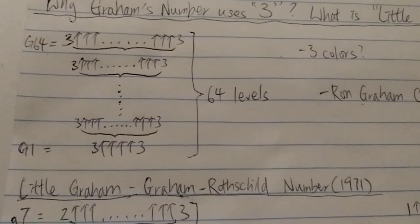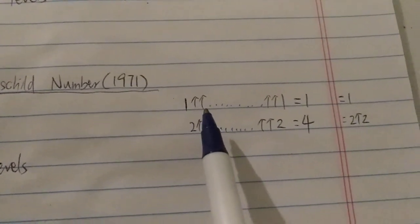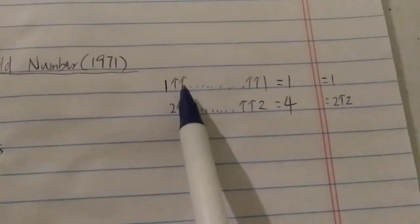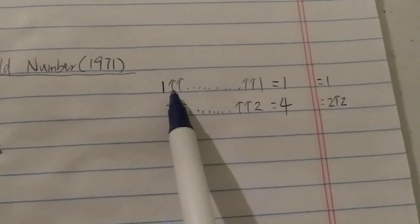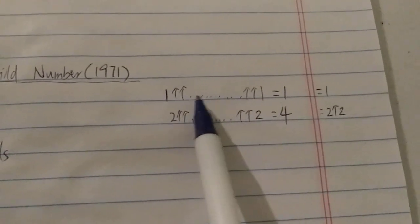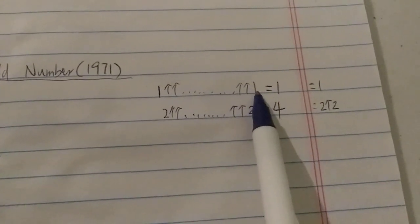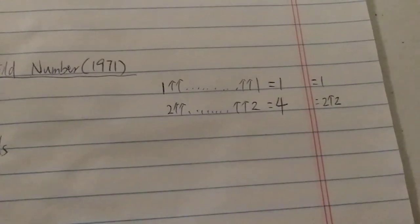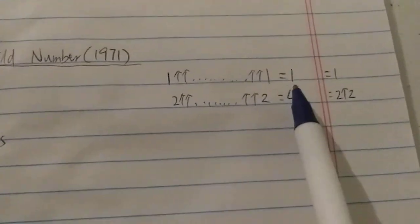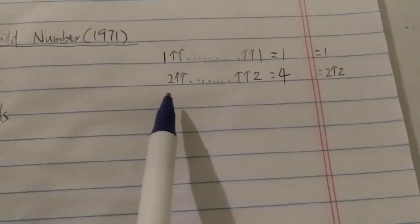He can't use 0 because that would just give zero. He can't use 1 because 1 with any number of arrows always equals 1 — by definition, it reduces to just a single 1, no matter how many arrows you add.